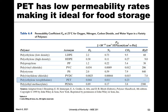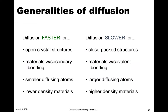We're wrapping up this chapter on diffusion, and I want to go over some generalities — the big picture of when diffusion is faster and when it's slower. Comparing crystal structures: if we want faster diffusion, we want a more open structure so things move in and out of lattice sites or interstitials quickly. Close-packed structures tend to be slower. We saw that example with carbon in the various forms of iron — FCC is slower, BCC is faster.